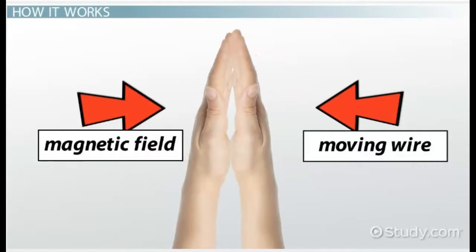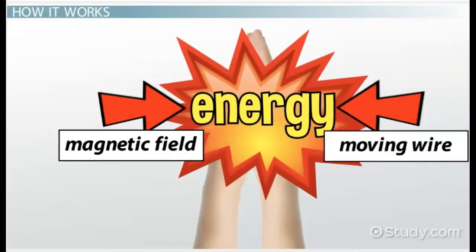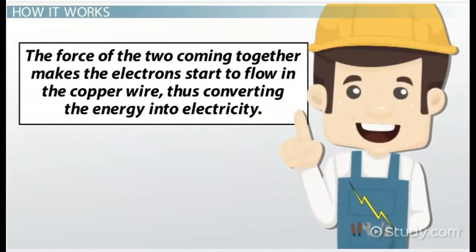The movement of the wire through the magnetic field is mechanical energy. The force of the two coming together makes the electrons start to flow in the copper wire, thus converting the energy into electricity.